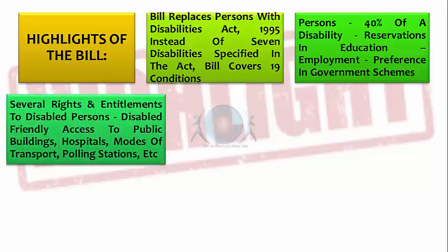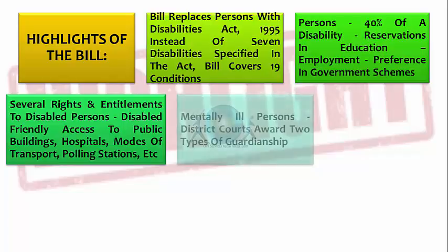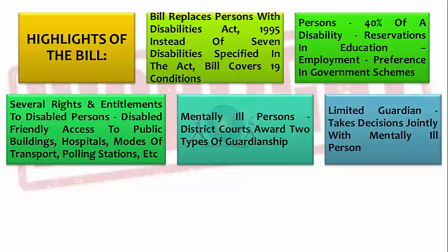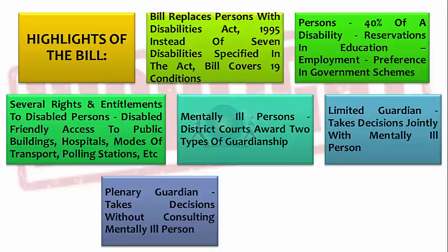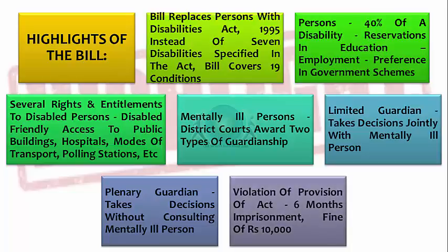The bill confers several rights and entitlements to disabled persons. These include disabled-friendly access to all public buildings, hospitals, modes of transport, polling stations, etc. In the case of mentally ill persons, the district courts may award two types of guardianship: a limited guardian takes a decision jointly with the mentally ill person, and a plenary guardian takes a decision on behalf of the mentally ill person without consulting him. The act has penal provisions — any violation is punishable with imprisonment up to six months and/or a fine of 10,000 rupees, with higher penalties for subsequent violations.